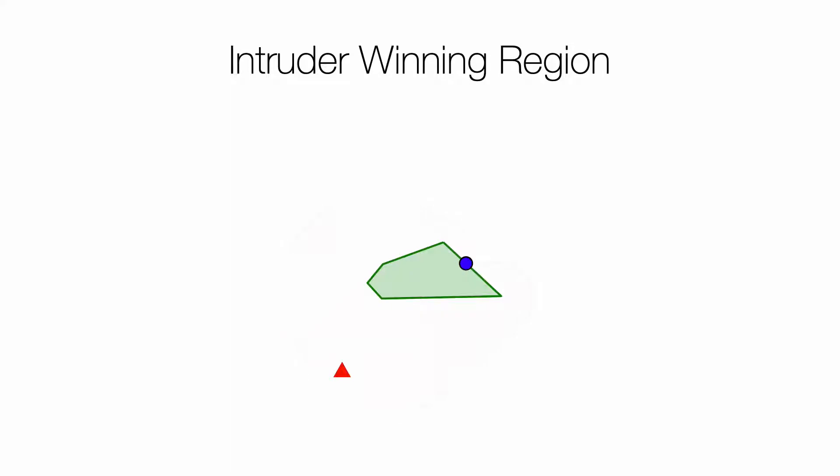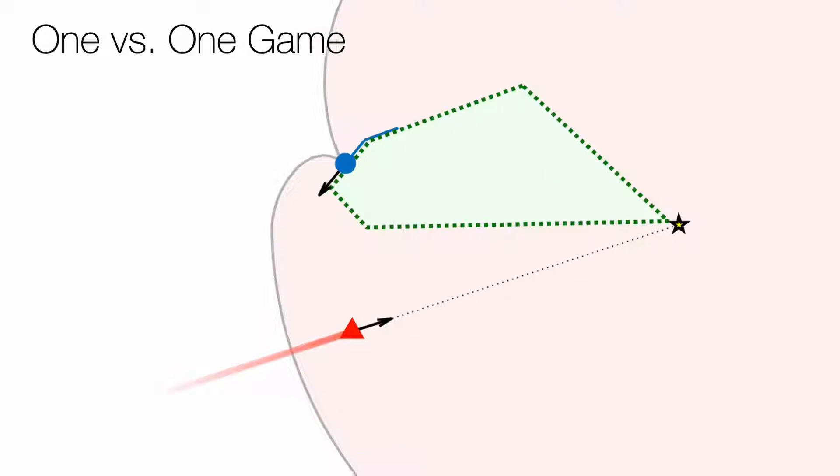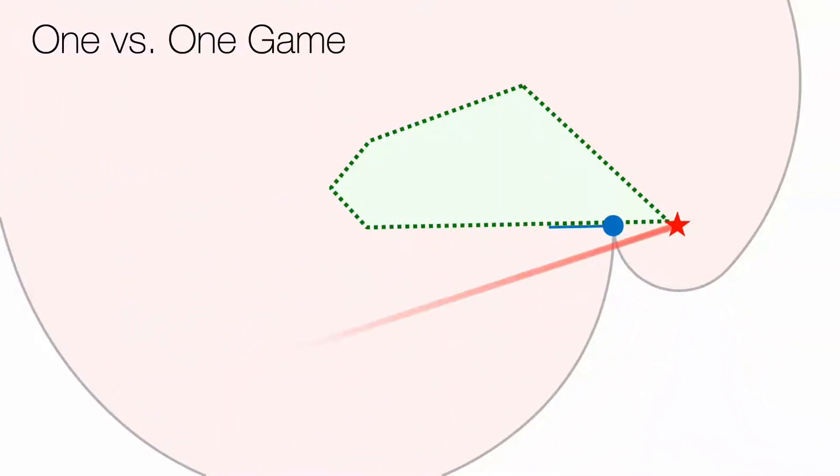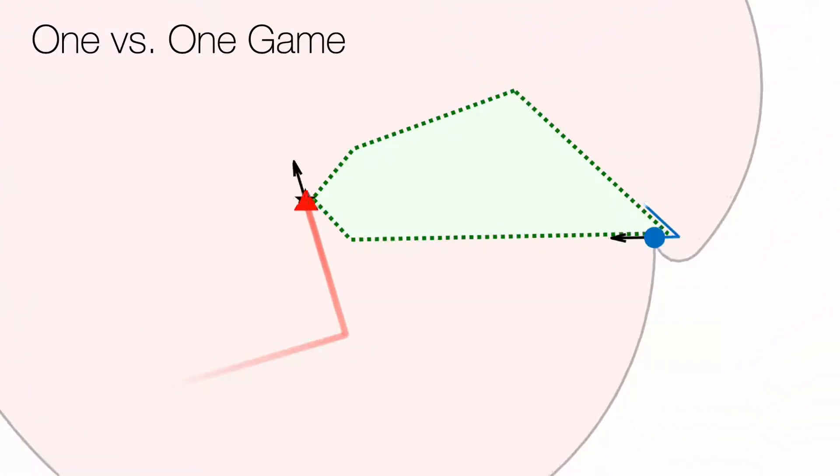The one versus one version of the game was previously solved to obtain the optimal strategies in the winning region. If the intruder starts in the winning region, then it has a strategy to reach the perimeter regardless of the defender's behavior.